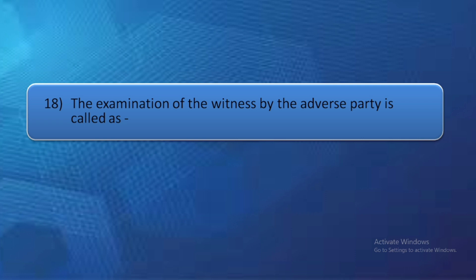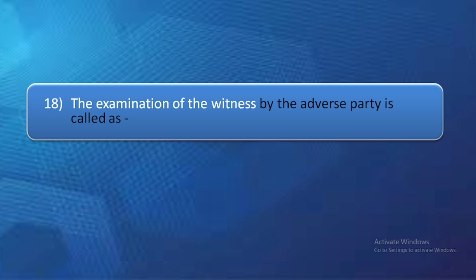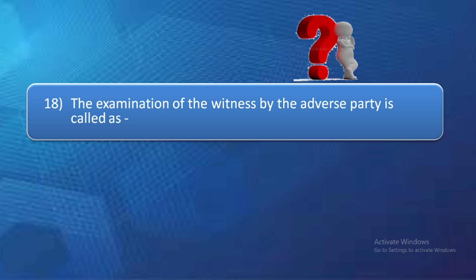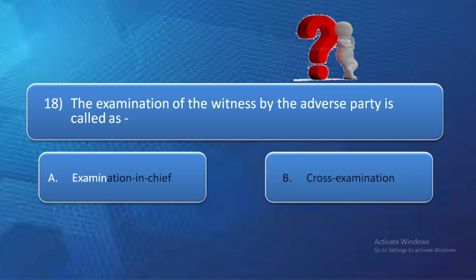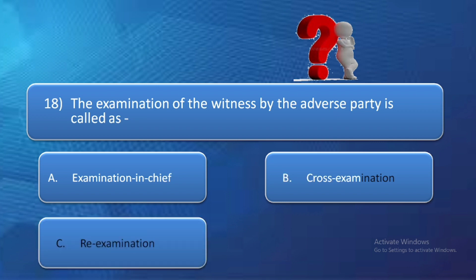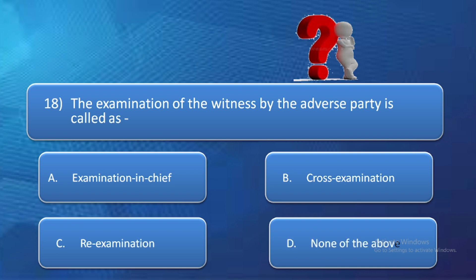Next question: The examination of the witness by the adverse party is called as — option B: cross examination, option C: re-examination, option D: none of the above. If a witness's examination is being done by the adverse party, we call this cross examination. So the correct answer is option B — cross examination.